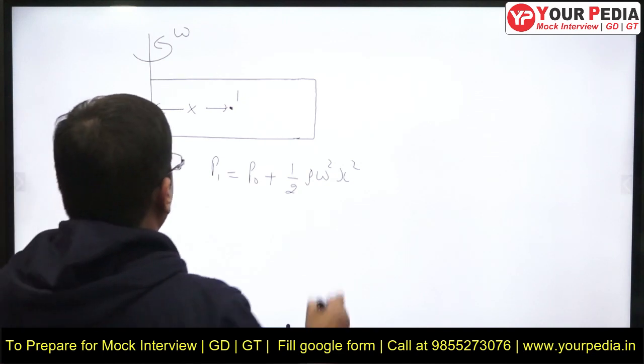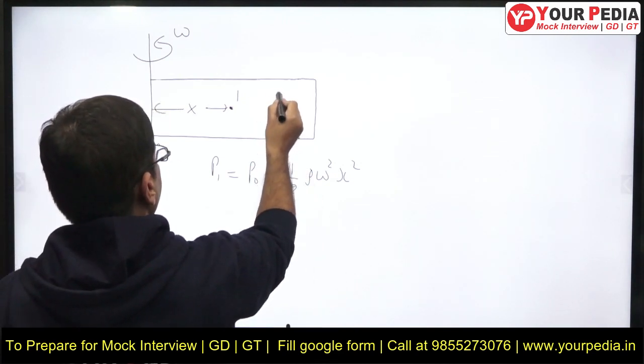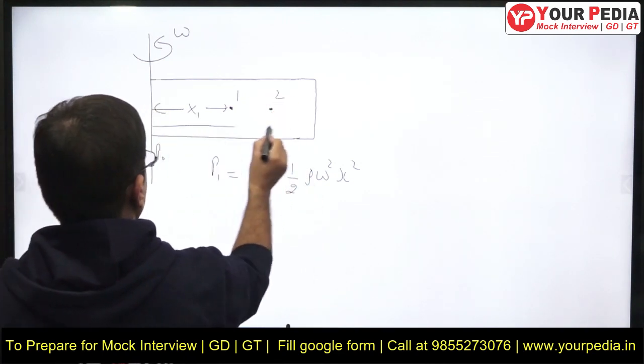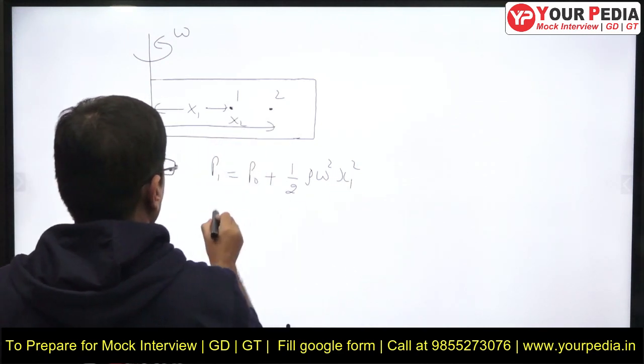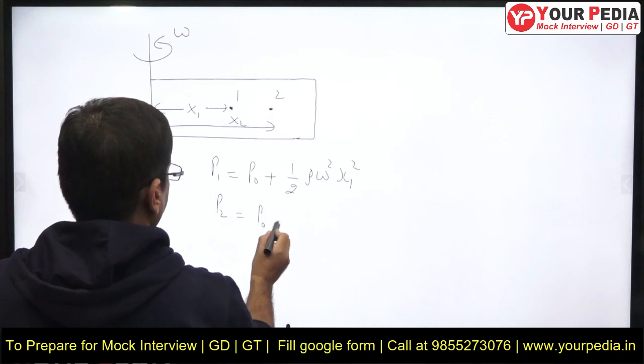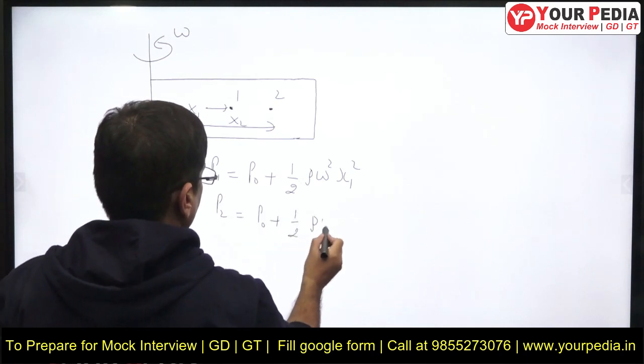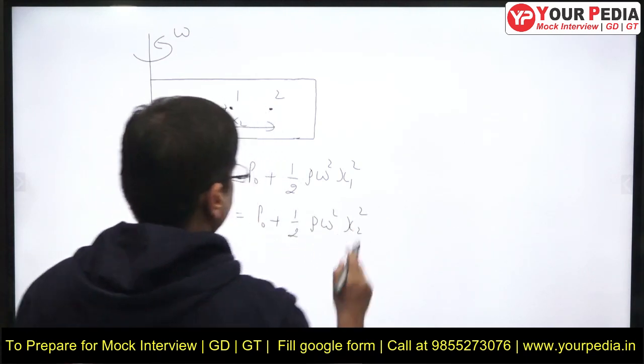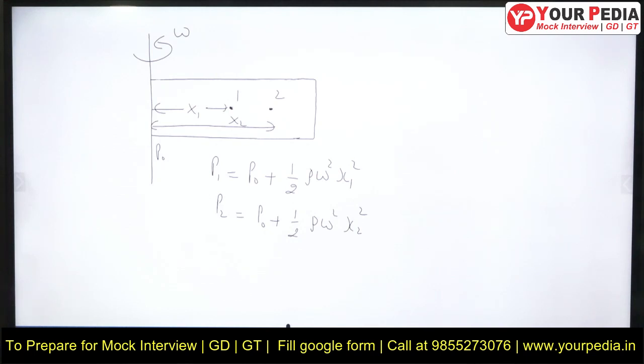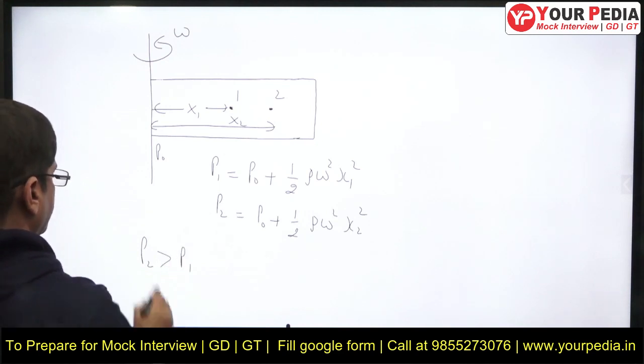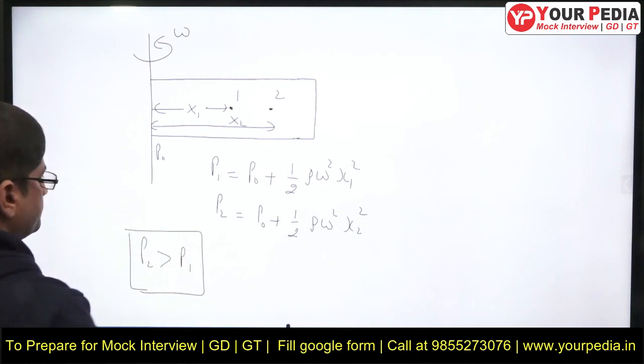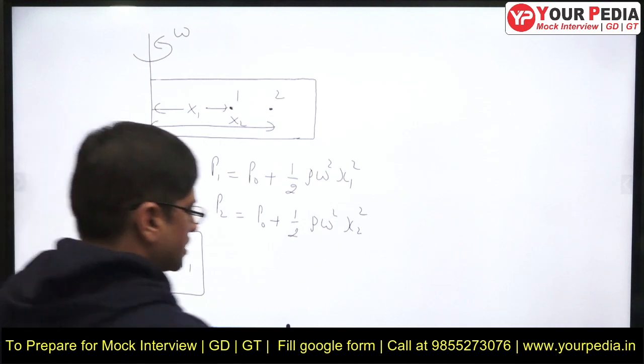Now let us say I give you point 2 also. Let us say this is X1 and this is X2. So can you tell me what is P2 now? P_naught plus half of rho omega squared X2 squared. Which one is more? P2 is more than P1. I think we have almost reached our answer now.